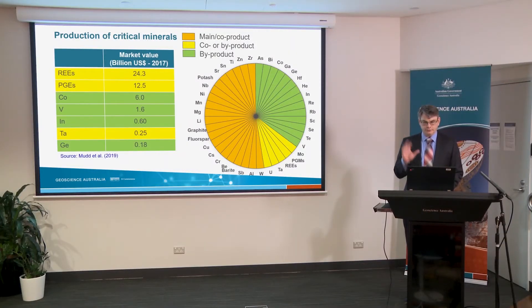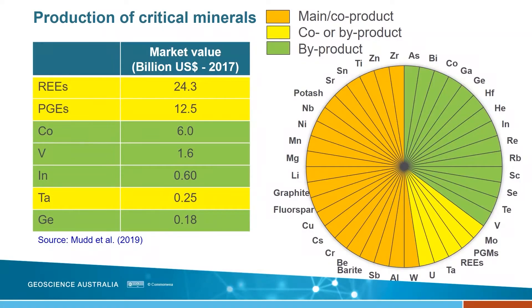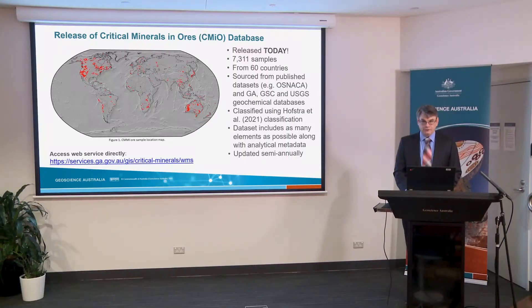Before we move on, I'd like to bring up this diagram which illustrates the production mode of different critical commodities. In the diagram to the right, you can see all of the critical commodities based on the USGS, Geoscience Australia, and GSC critical minerals lists, colored by whether they're produced as a byproduct, a co-product, or a main product. The table to the left shows an indication of the value of the critical minerals, including rare earth elements, platinum group elements, and more. A lot of the high-value critical minerals are actually produced as either a co-product or a byproduct, and the intention is to document the co-product and byproduct potential of deposits.